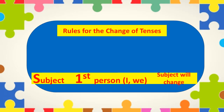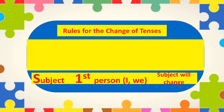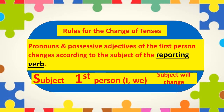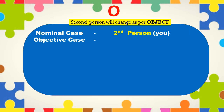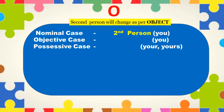In short, as per the SUN concept, the first person — that is 'I' or 'we' — will change as per the subject. Then we have O, which stands for object. If a pronoun or possessive adjective is second person, i.e. 'you' or 'your,' then it changes according to the object.